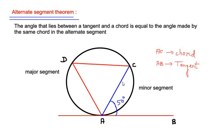This chord AC divides the circle into two segments: one is a smaller segment which is the minor segment in which the angle 50 is made, and there is another segment which is the major segment. The same chord AC makes an angle at point D.